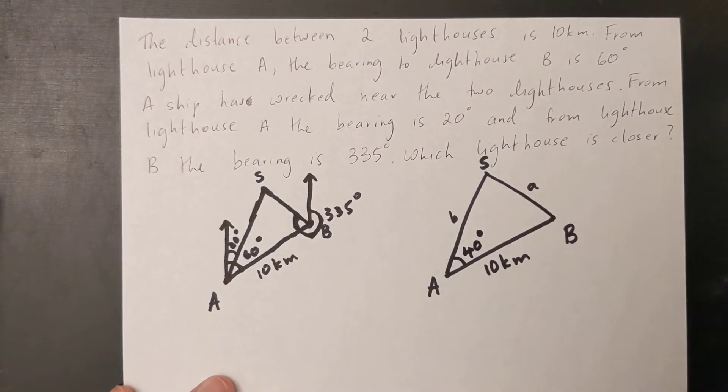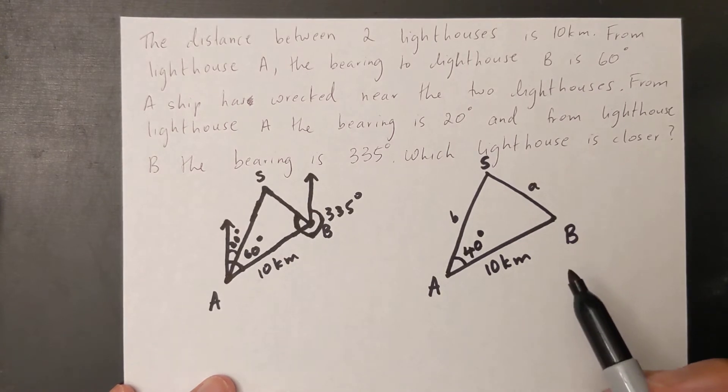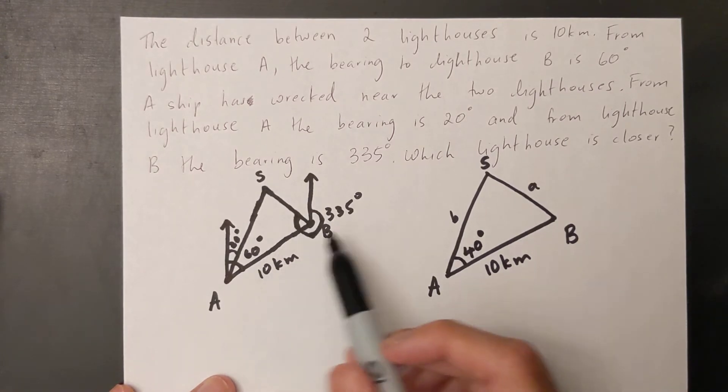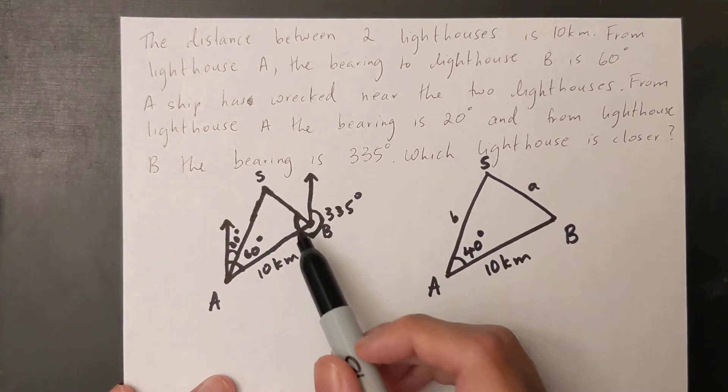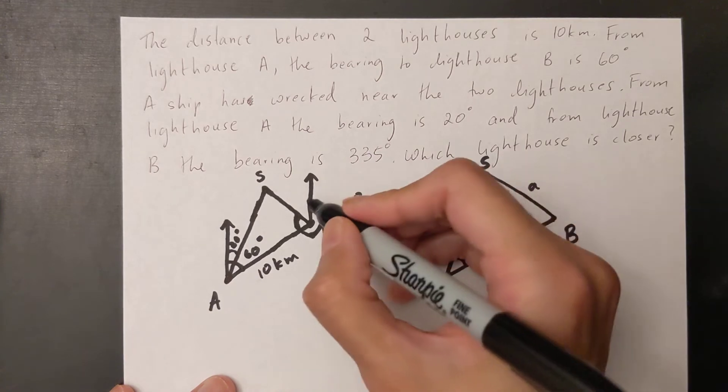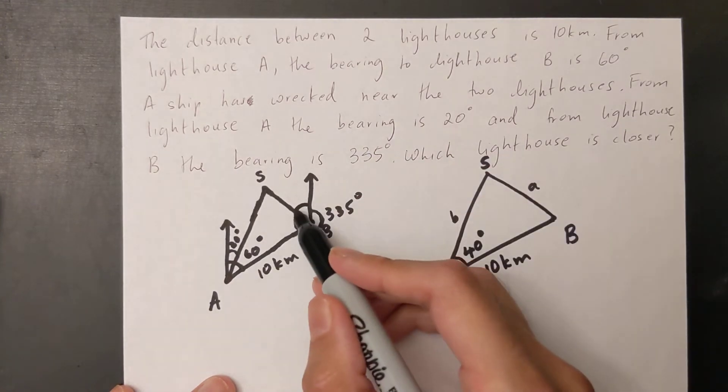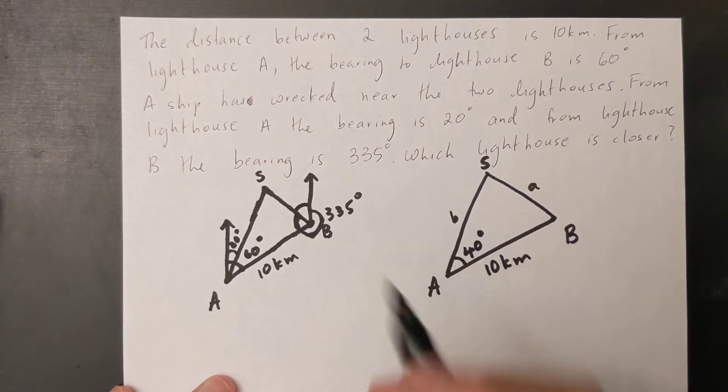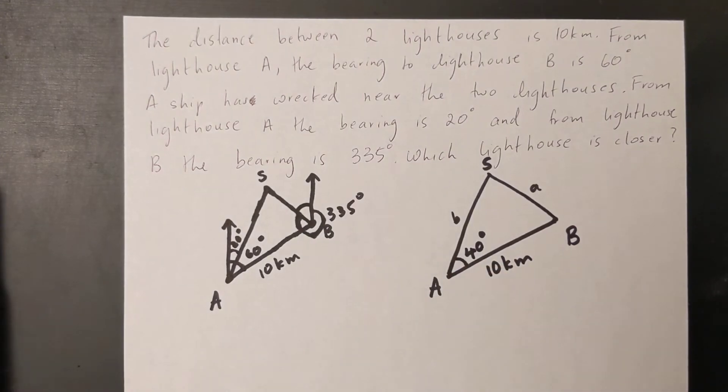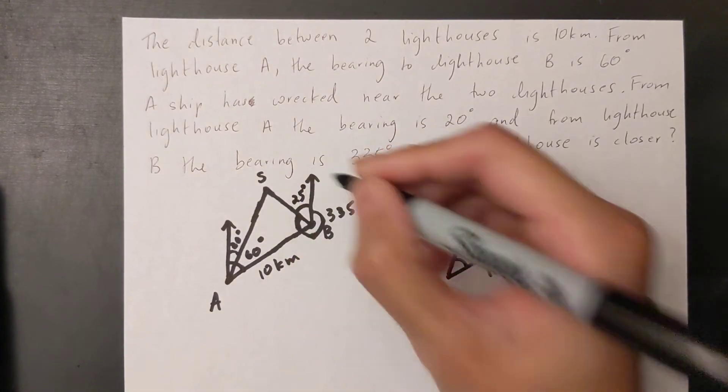I still don't have enough information. I need one more angle to be able to solve this. So again I'm going to try and find another angle using this. Not possible for me to find this one here. So the way I like to do it is I like to find this angle here first. So this tiny angle is 360 minus 335 which is 25 degrees.